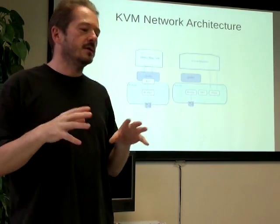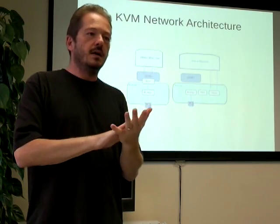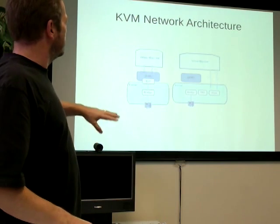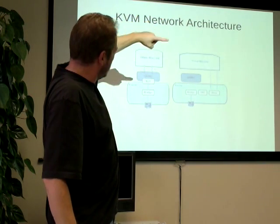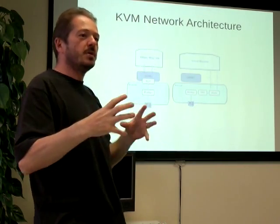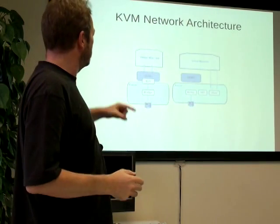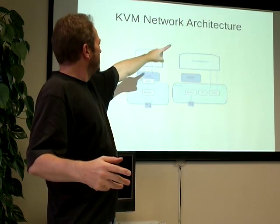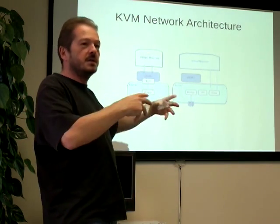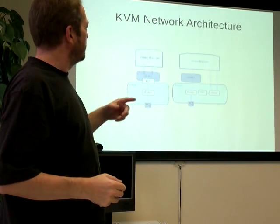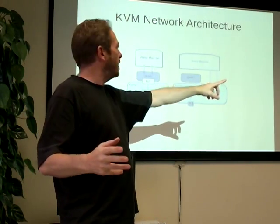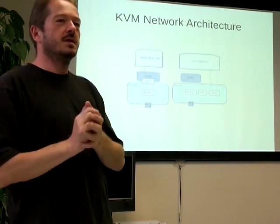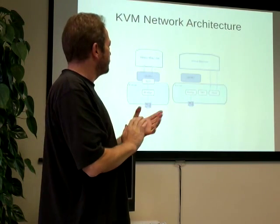An example of the overhead you get with a KVM-style thing can be demonstrated by looking at the networking. You've got the virtual machine running, QEMU is the user process in the host managing interaction between host and guest. A network packet comes in on the real network adapter, goes through a bridge, through the tap interface, gets picked up in user space, and gets shoved across into the virtual machine.